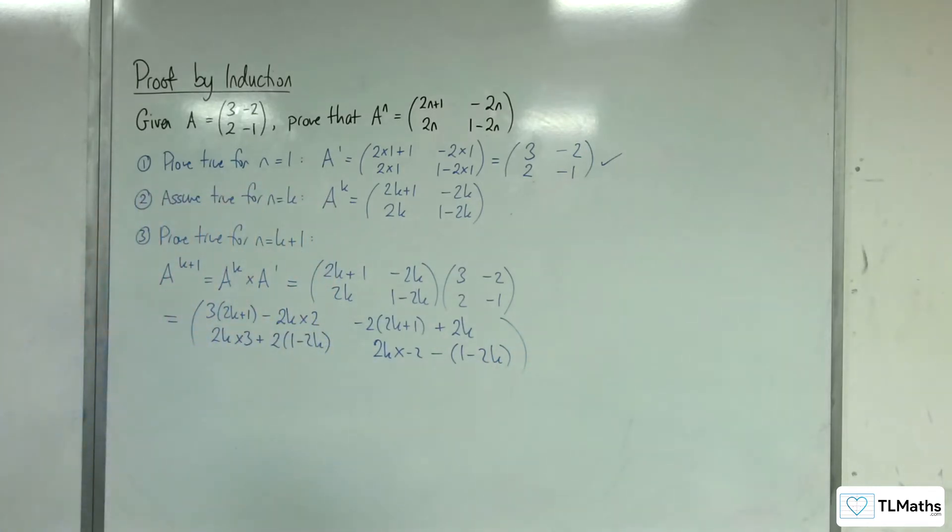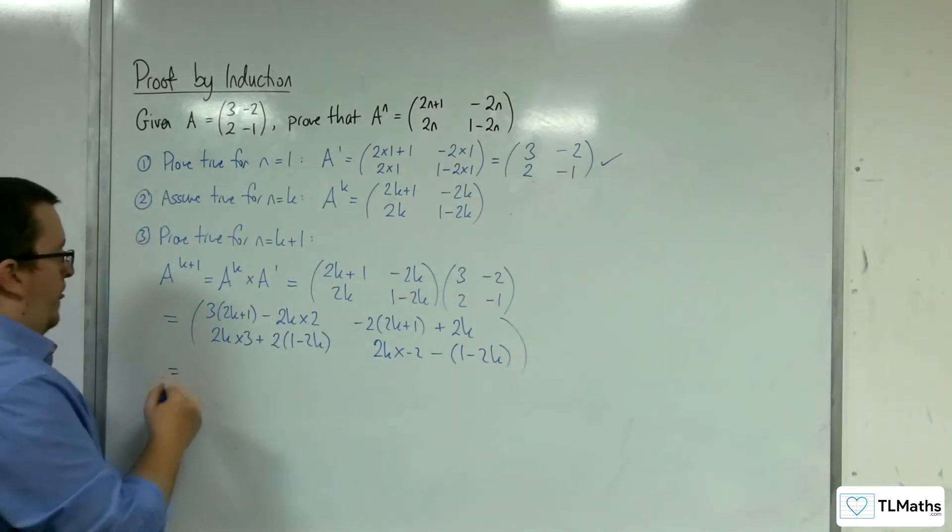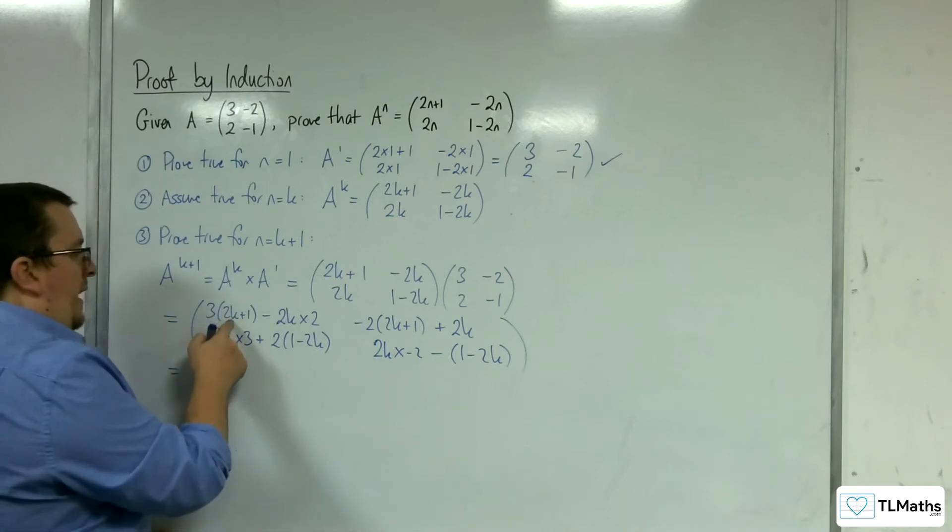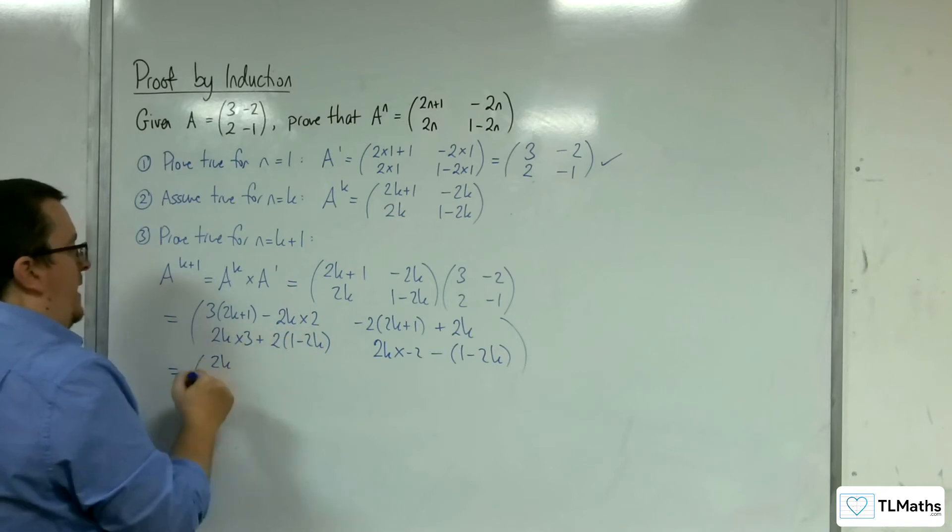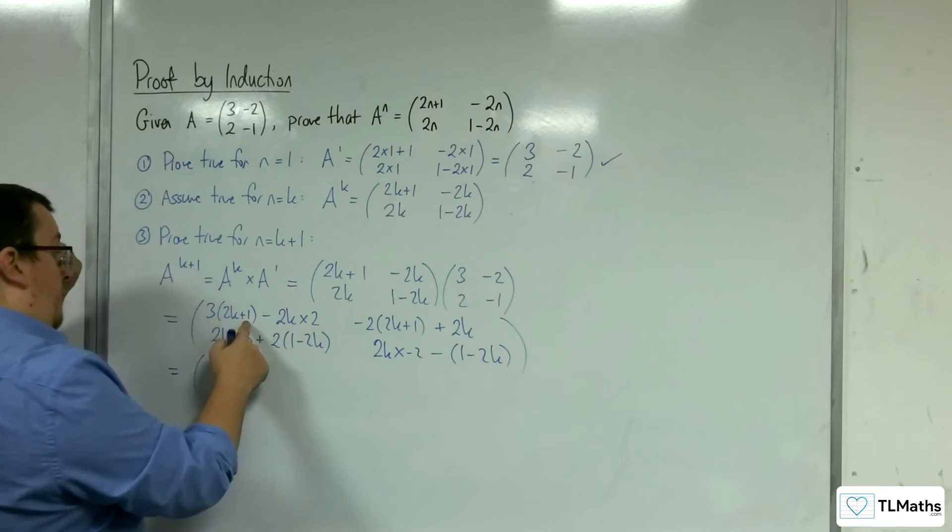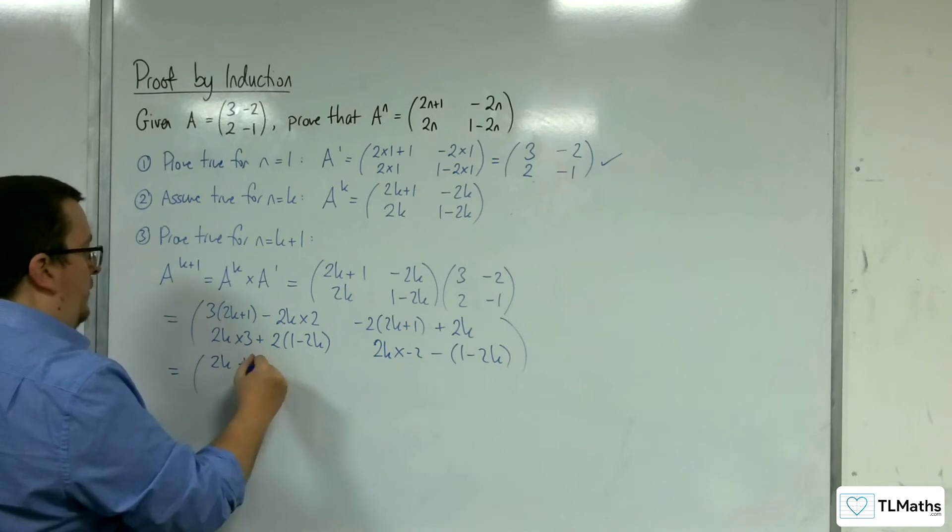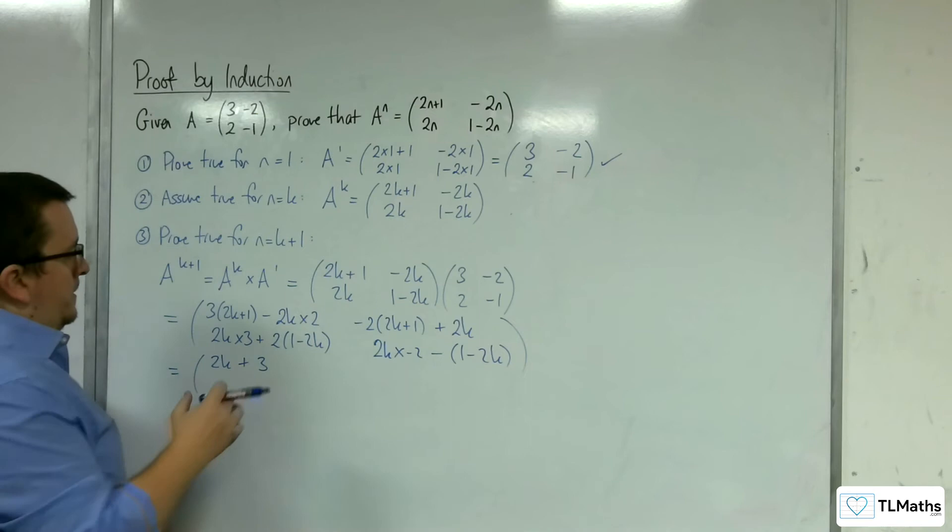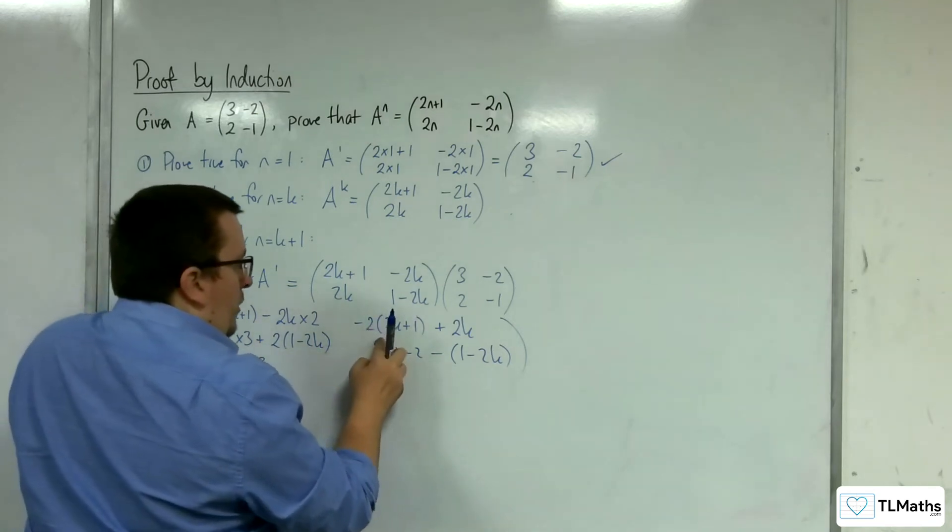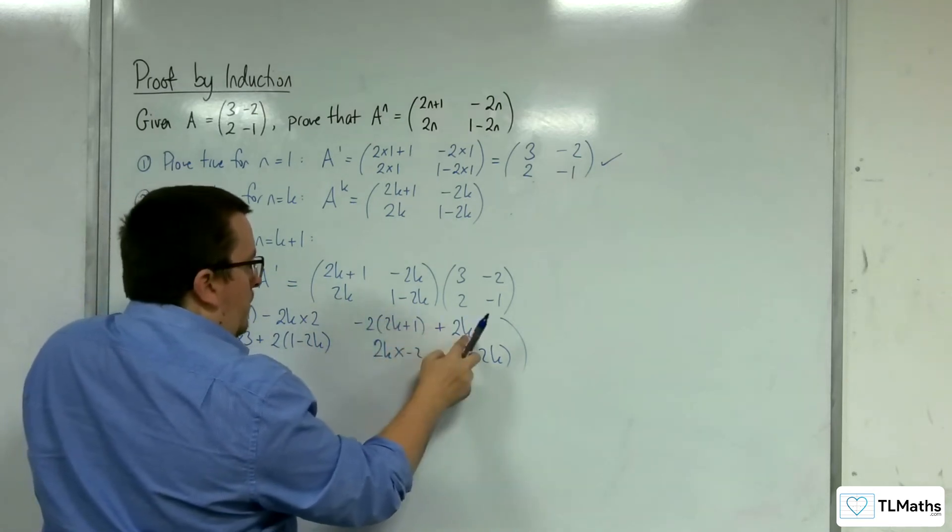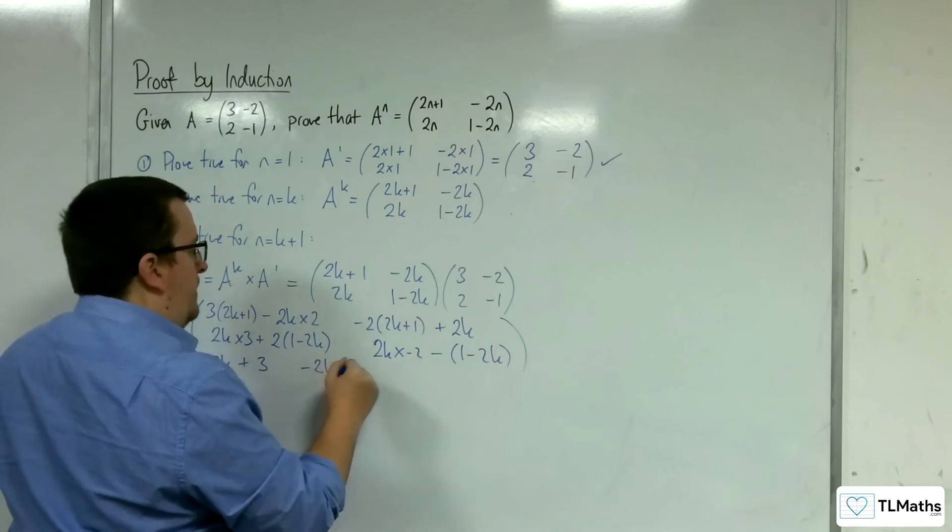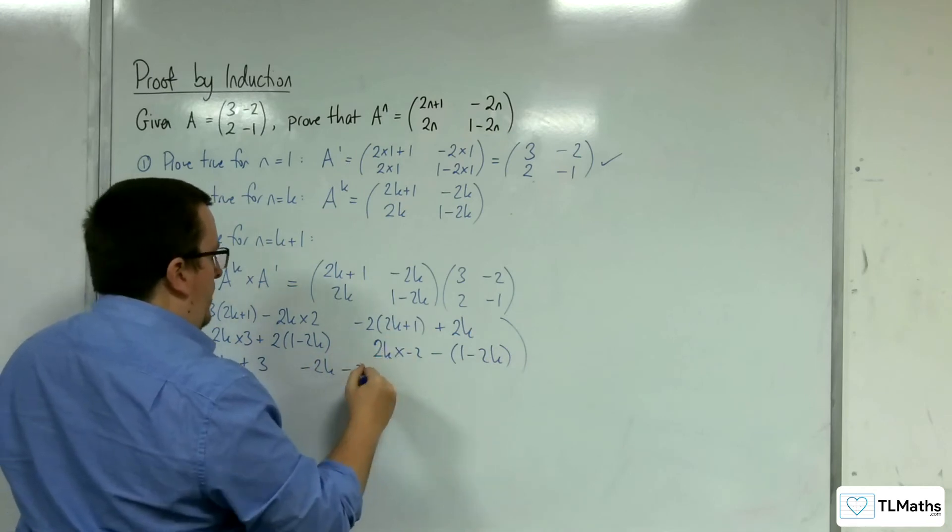So this is our matrix. We've got 6k take away 4k, so we've got 2k, and 3 lots of 1, so +3. Here we've got -4k+2k, so that's -2k, minus 2 times 1, so -2.